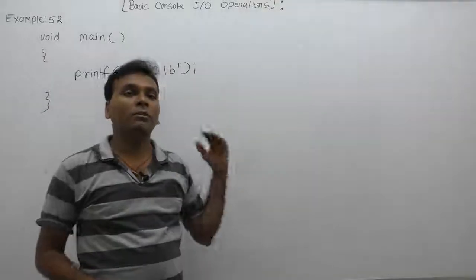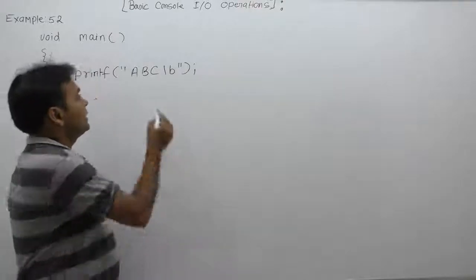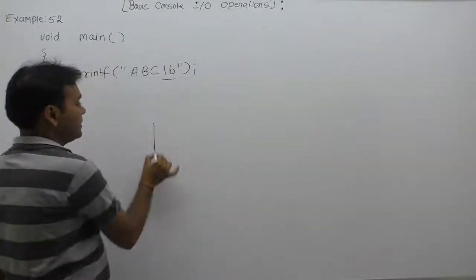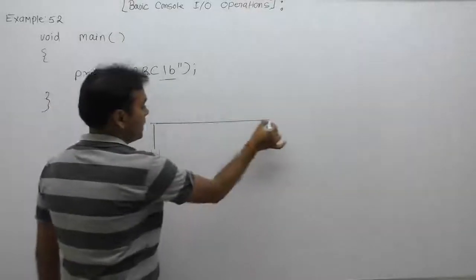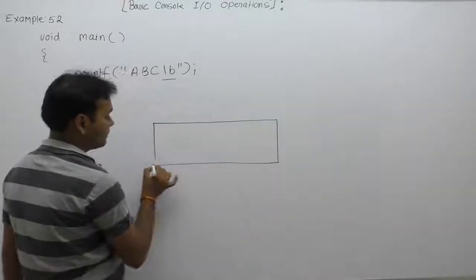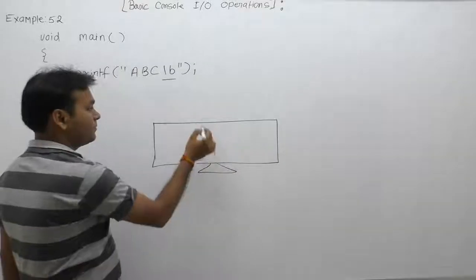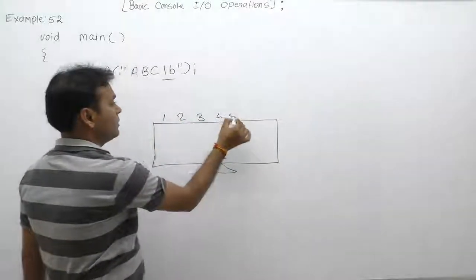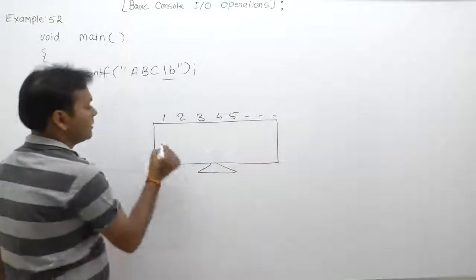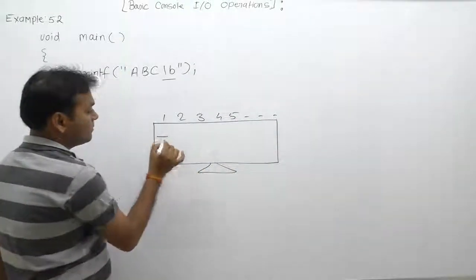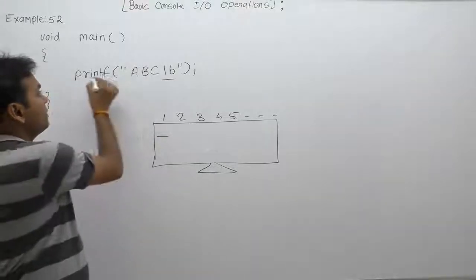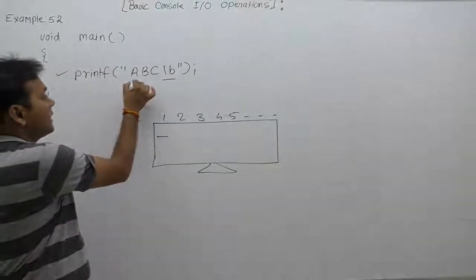What is the behavior of that program according to this printf statement or escape sequence character \b? \b stands for backspace character. Positions are numbered 1, 2, 3, 4, 5, and so on. Initially, the cursor will be available on the first position of the first line. According to the printf statement, this will print character 'a'.